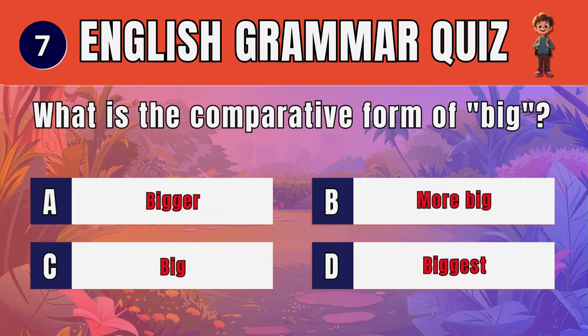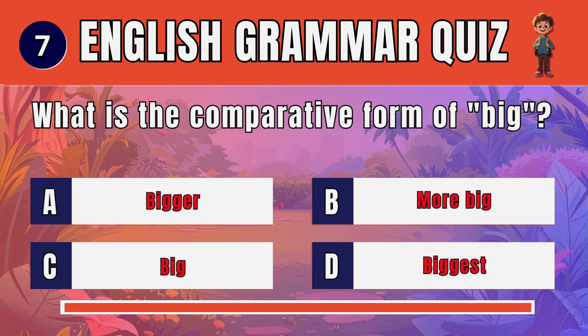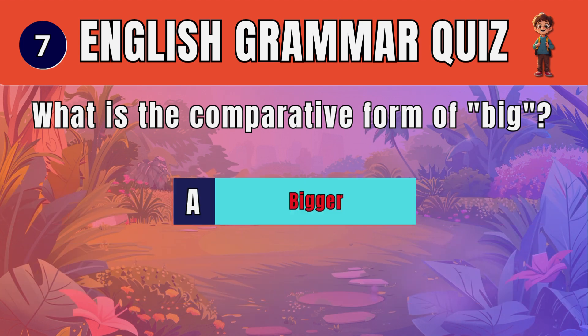Question 7. What is the comparative form of big? The answer is: A. Bigger.